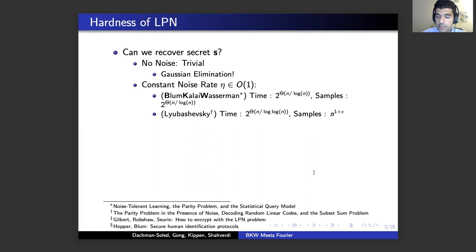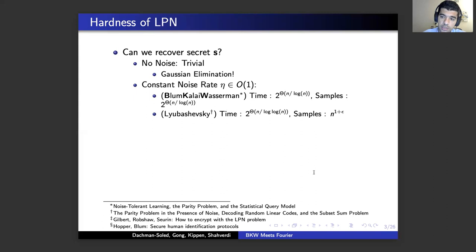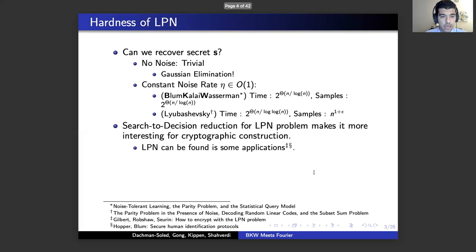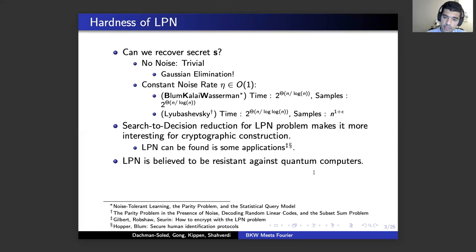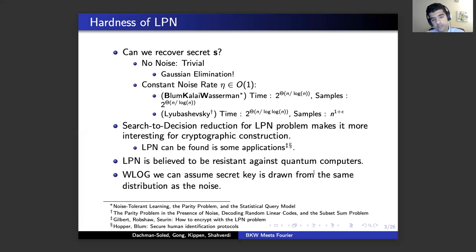It's easy to recover s if there is no noise — we can just run Gaussian elimination. But even for a constant noise rate, the best algorithm is by Blum-Kalai-Wasserman, which runs in time 2^O(n/log n) and needs essentially the same number of samples. Later, there is an improvement by Lyubashevsky which only needs a polynomial number of samples but runs in slightly worse time. There is a search-to-decision reduction for LPN, making it interesting for cryptography, especially for encryption based on LPN. LPN is believed to be resistant against quantum computers, and without loss of generality we can assume the secret key is drawn from the same distribution as the noise.